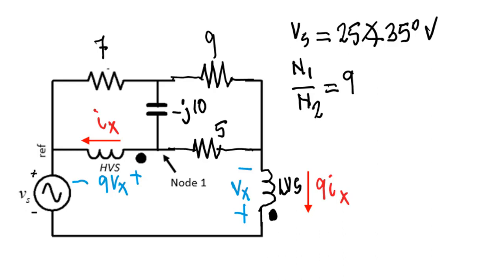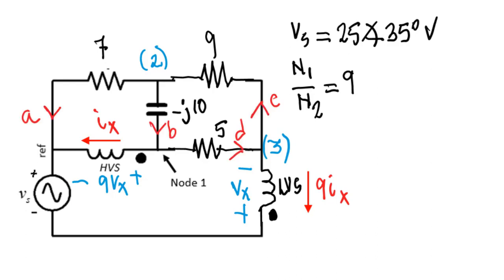We're almost ready. They are giving us what is the reference — node 1. So we choose node 2 and node 3. Next, I label the branch currents: A, B, C, D — very short labels, just letters, because I will use them in a moment.